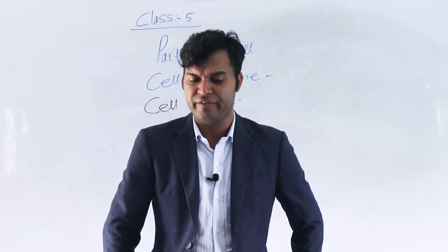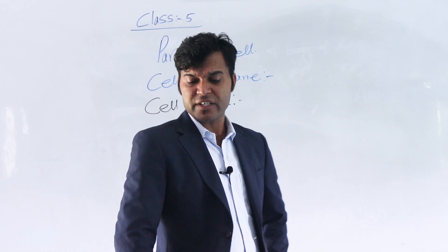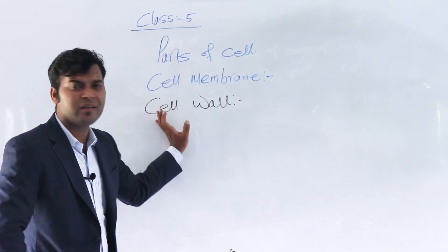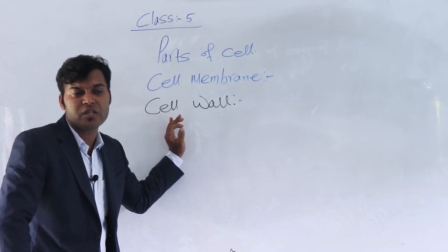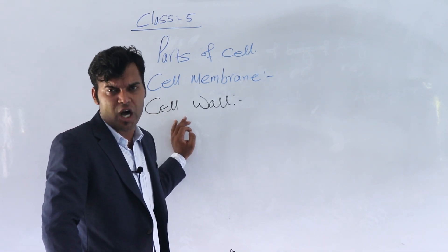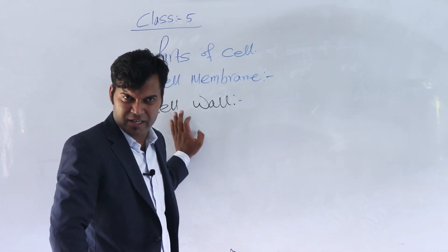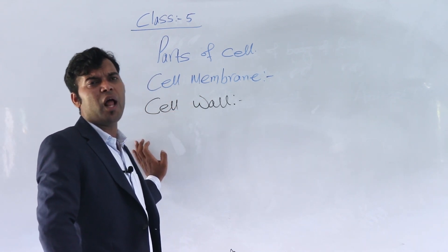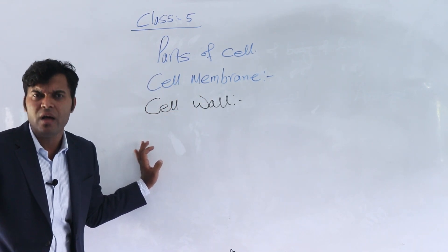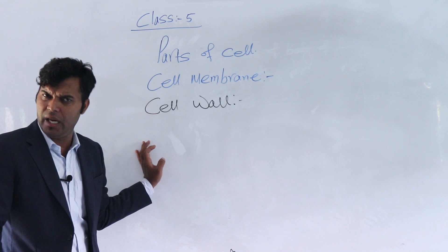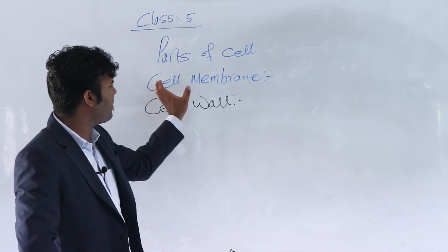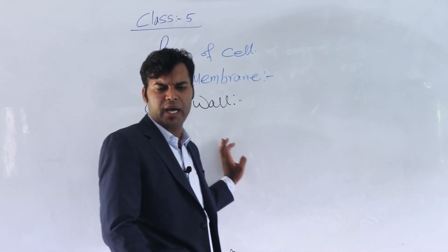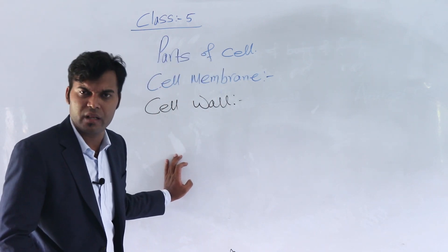The cell wall is thick. It gives the shape to the plant cell. Cell wall is thicker than the cell membrane. Cell wall is only found in a plant cell, but cell membrane is found in both plant cell as well as the animal cell. Clear?